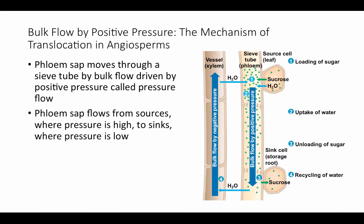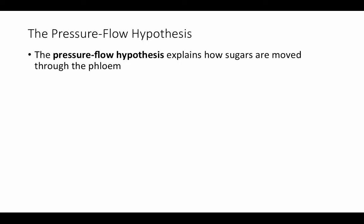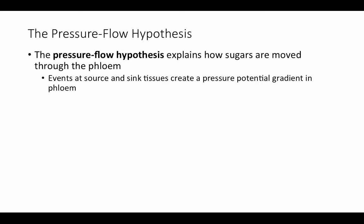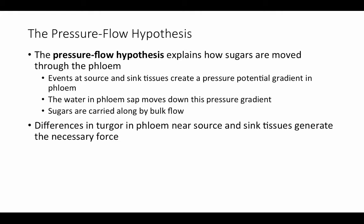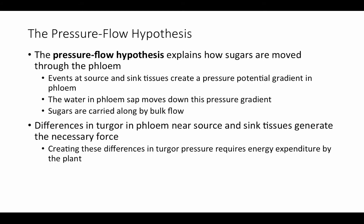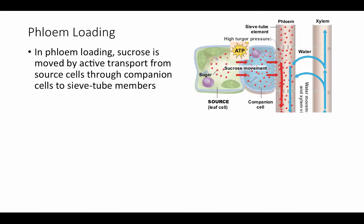Phloem sap flows from sources where pressure is high to sinks where pressure is low. The pressure flow hypothesis explains how sugars are moved through the phloem: events at the source and sink tissues create a pressure potential gradient, and water in the phloem sap moves down this pressure gradient carrying the dissolved sugars by bulk flow. The source of this positive pressure is differences in turgor pressure — higher turgor pressure near the source in sieve tube elements and lower turgor pressure near the sink tissues. Creating these differences requires energy expenditure by the plant.